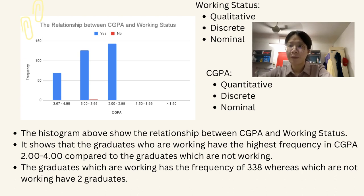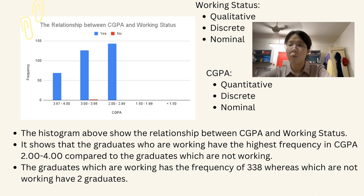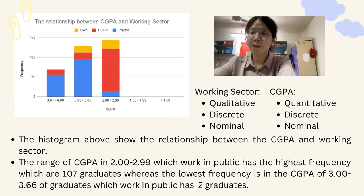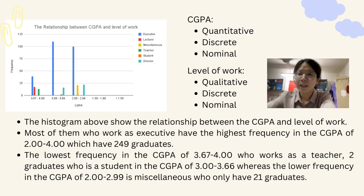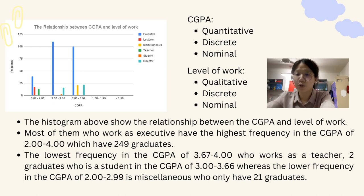The histogram shows the relationship between CGPA and working status. Graduates who are working have the highest frequency in CGPA 2 to 4 compared to those not working — 338 working versus 2 not working. The next histogram shows the relationship between CGPA and working sector. Graduates with CGPA 2 to 2.99 working in the public sector have the highest frequency at 107, whereas those with CGPA 3 to 3.66 working in public have the lowest at 2 graduates. The histogram also shows the relationship between CGPA and level of work — executives have the highest frequency in CGPA 2 to 4, with 249 graduates, while teachers in CGPA 3.67 to 4 and students in CGPA 3 to 3.66 have the lower frequencies, and technicians in CGPA 2 to 2.99 have 21 graduates.